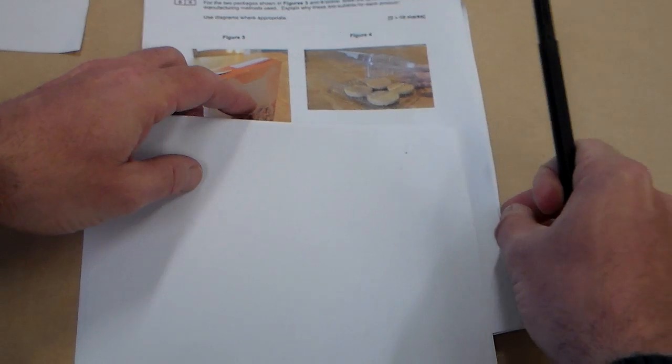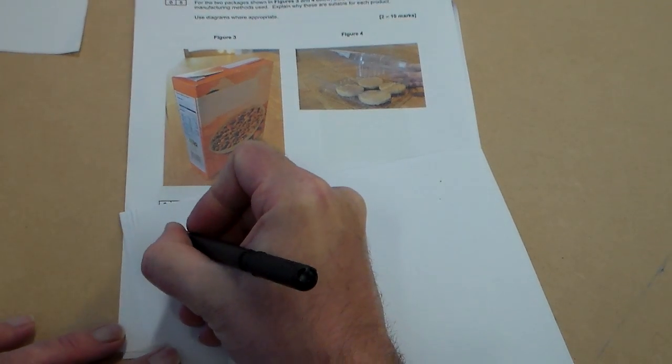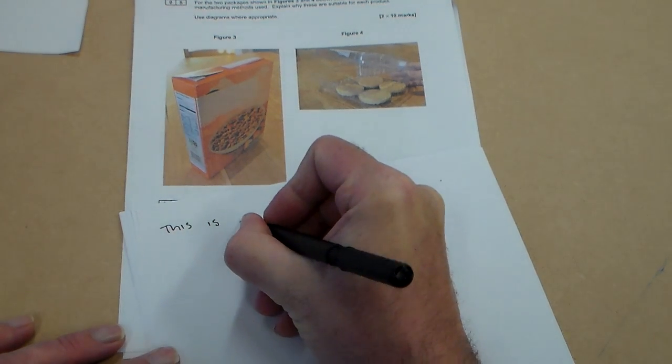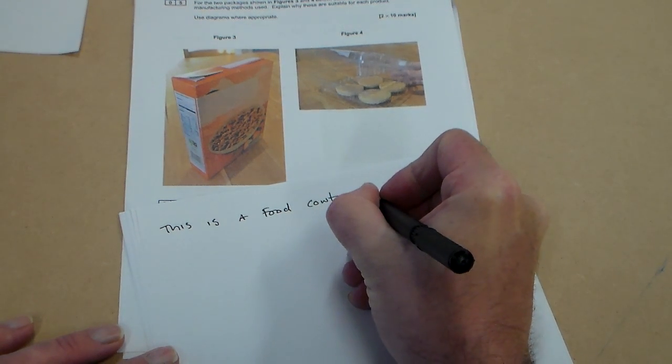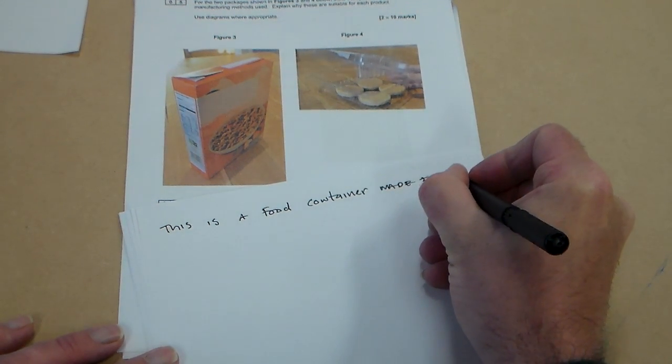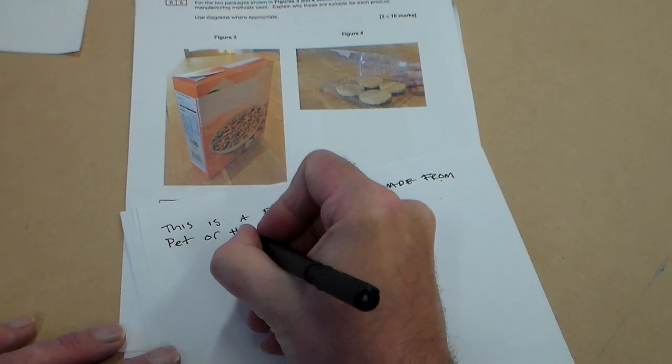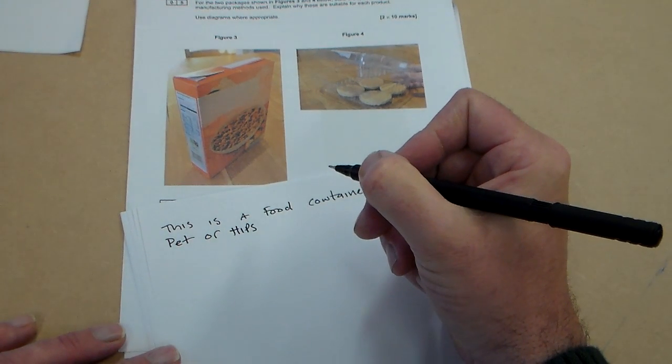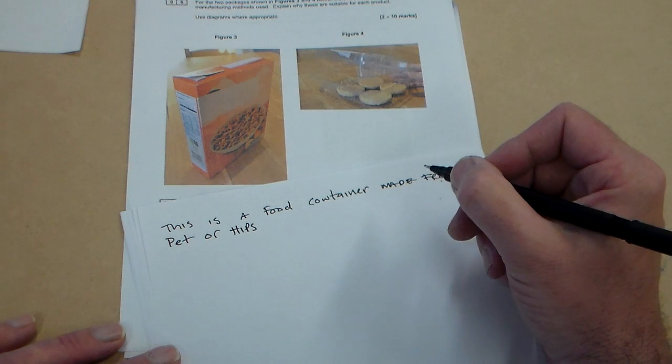So the first thing we're going to say with figure 4 is that this is a food container made from PET or HIPs. You could put HDPE or LDPE and you would get marks for those, but I'm going to say PET or HIPs.